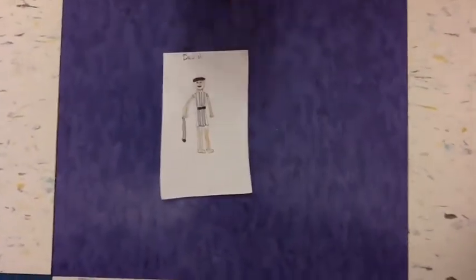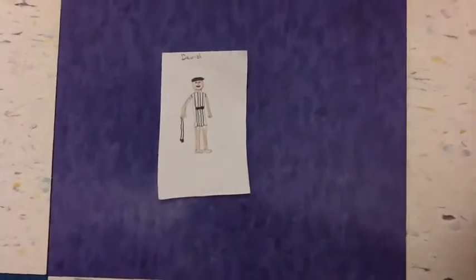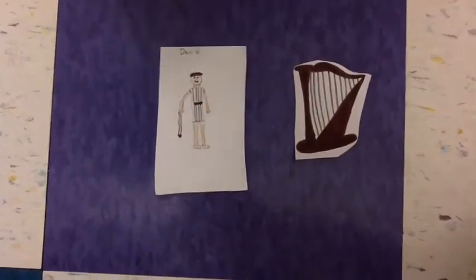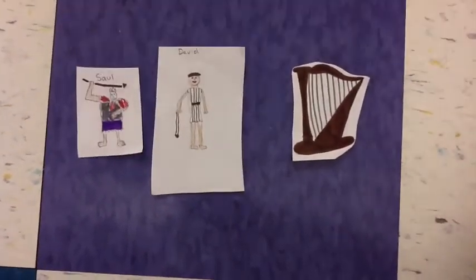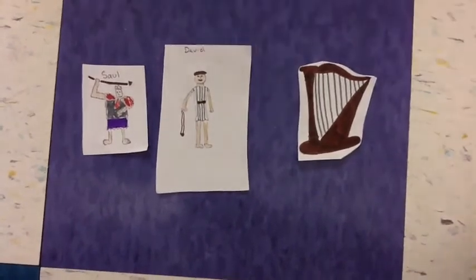This is David. When David was a young shepherd, he was asked to play the harp for King Saul, who had a nervous condition. King Saul was also the first king of Israel.